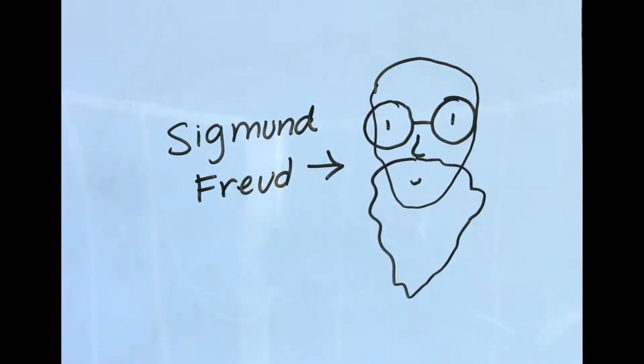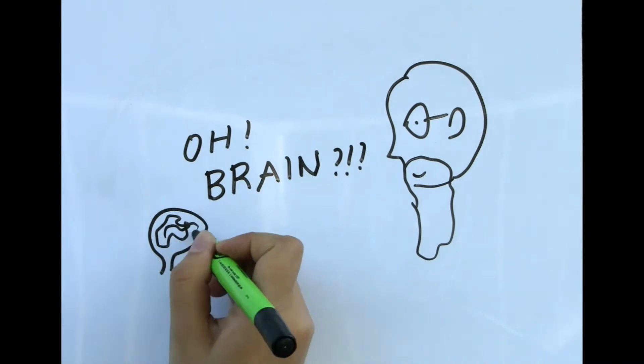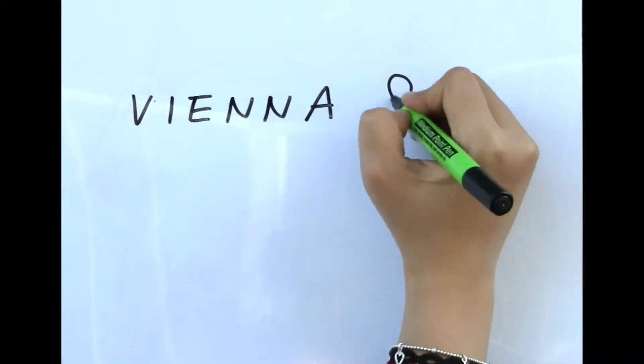Vienna was home to the biggest names in psychology, most notably Sigmund Freud, the Austrian neurologist. Because of Vienna's deep connection to psychology and the human mind, we chose it as our theme this year.